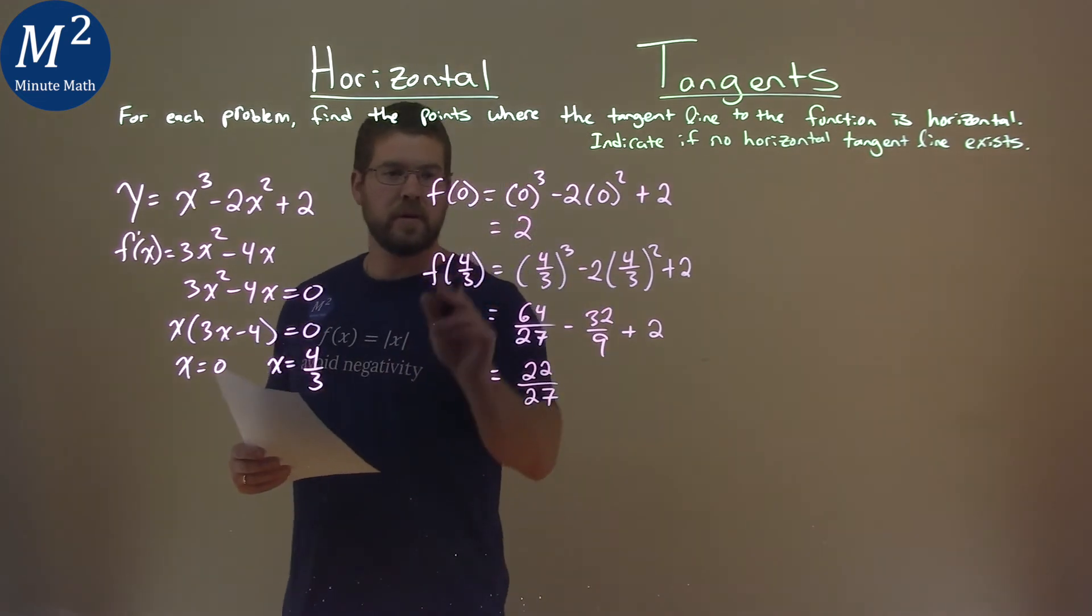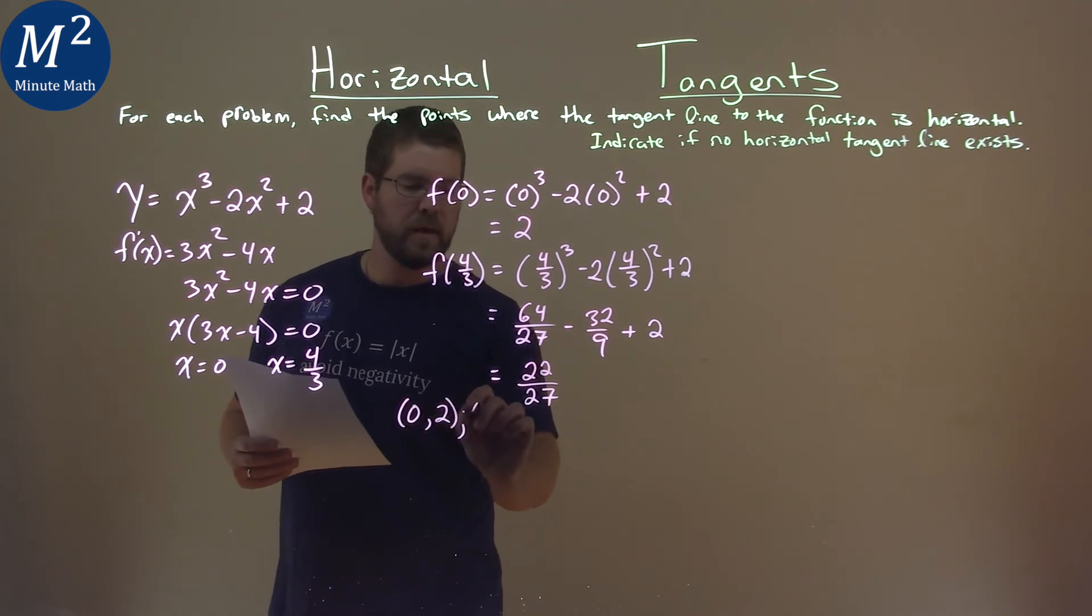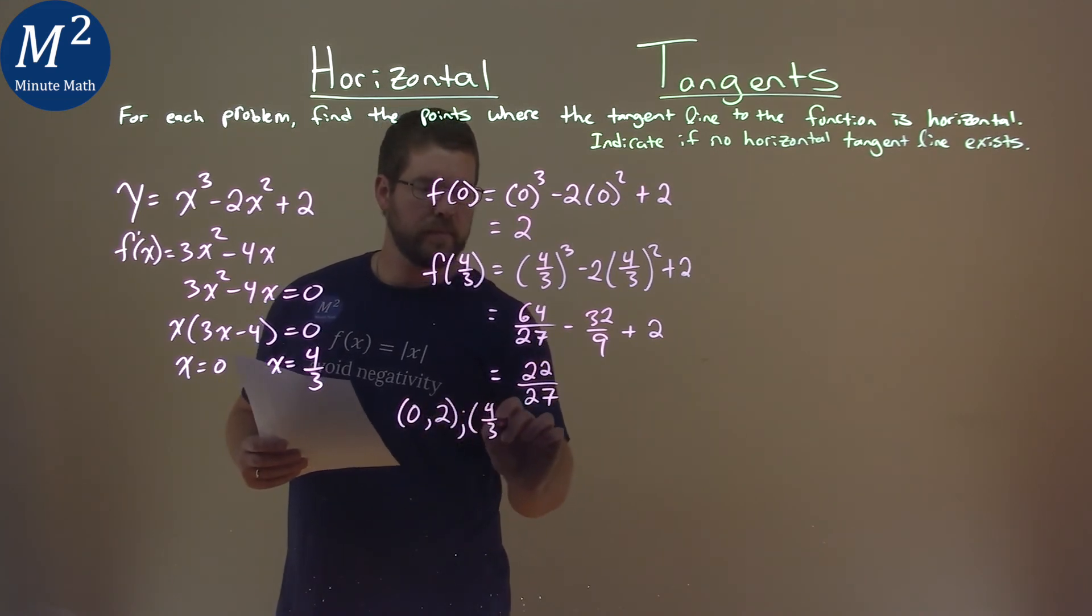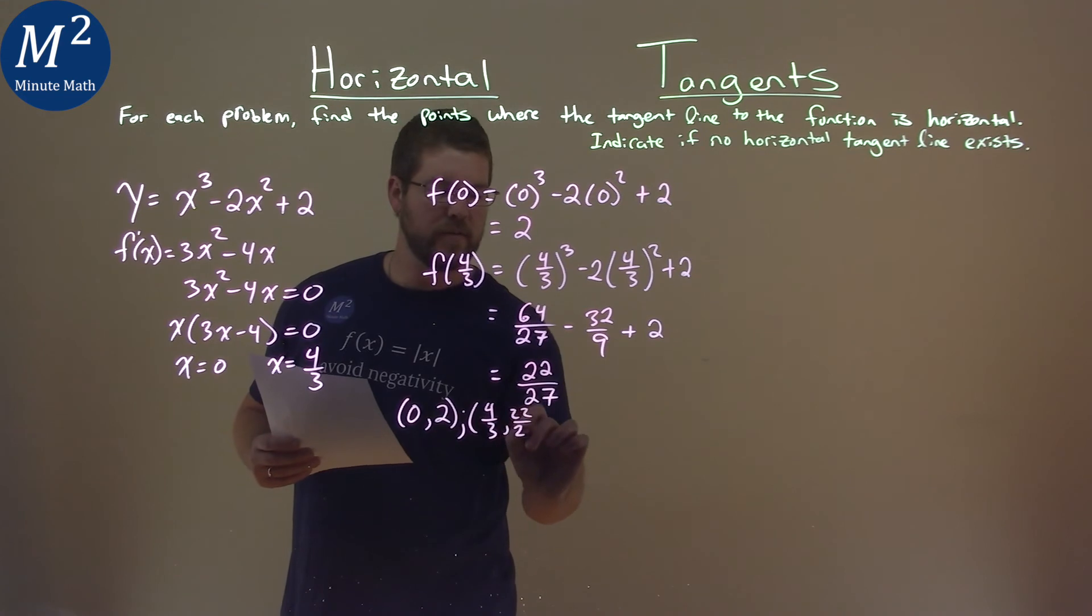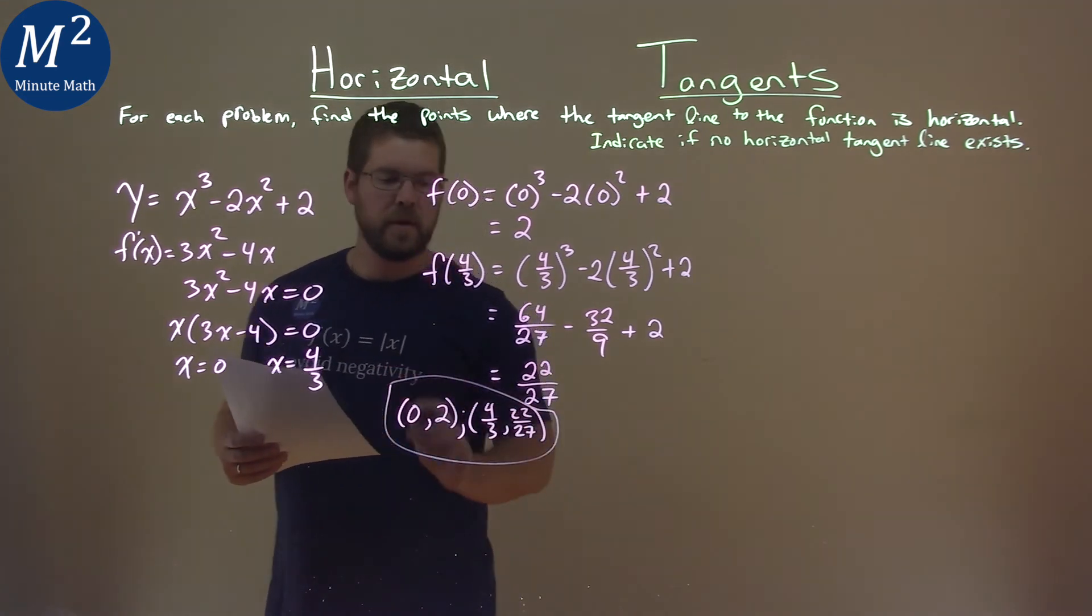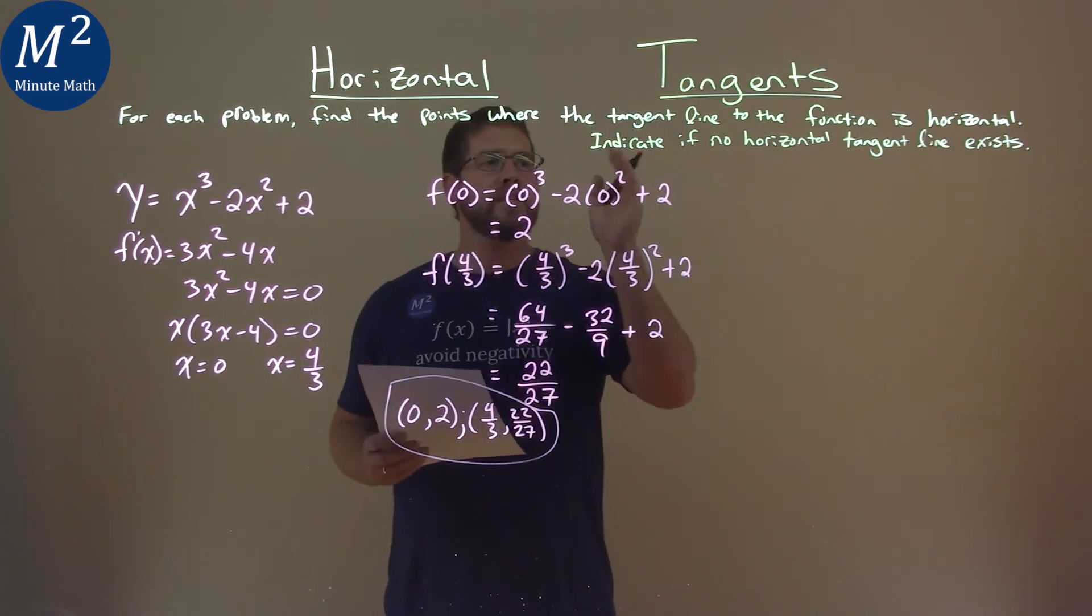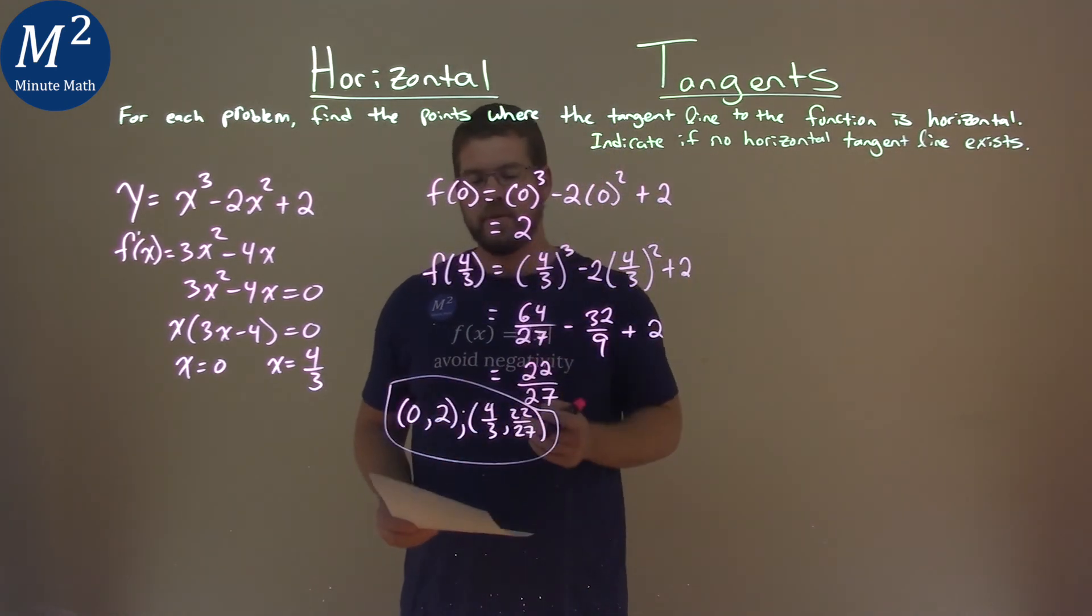And so our coordinate points here, combining the x and y value, are 0, 2, and we have 4 thirds, comma 22 over 27. Should have given myself a little more room. It's all right. And these two coordinate points are where the tangent line to the function is horizontal.